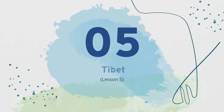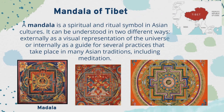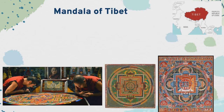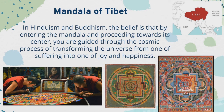Lesson 5: Tibet. Mandala of Tibet. A mandala is a spiritual and ritual symbol in Asian cultures. It can be understood in two different ways: externally, as a visual representation of the universe, or internally, as a guide for several practices that take place in many Asian traditions, including meditation. In Hinduism and Buddhism, the belief is that by entering the mandala and proceeding towards its center, you are guided through the cosmic process of transforming the universe from one of suffering into one of joy and happiness.